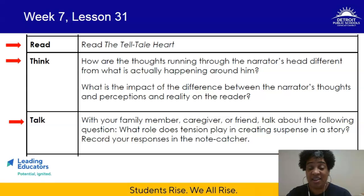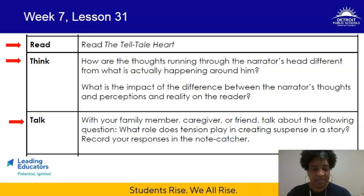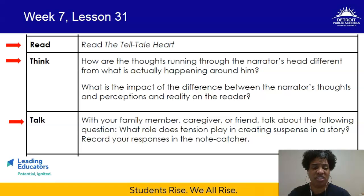You're going to do some skimming today, reviewing some of your previous annotations, and you're going to think about the question: How are the thoughts running through the narrator's head different from what is actually happening around him? You may have already noticed a disconnect between what his perception is and what the reality is. We're going to look at that more today, along with the impact of that difference on the reader. In your talk discussion with your family member, caregiver, or friend, you'll talk about: What role does tension play in creating suspense in the story? You've already talked about suspense last week, so draw on those discussions to help you.